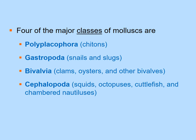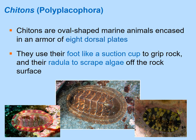Chitons (Polyplacophora) have eight dorsal plates on their surface. Their foot acts like a suction cup to grip and move across rocks. They have a radula used to scrape algae off rocks as they move.